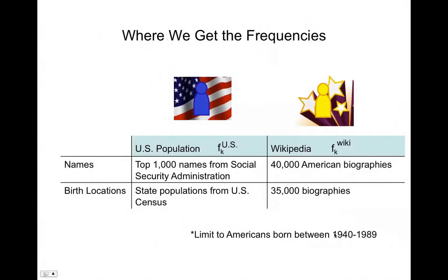Where do we get these frequencies? For the U.S. population, for names we get it from the Social Security Administration, and for birth locations we get it from the U.S. Census. For Wikipedia, we use 40,000 American biographies, and we were able to get birth locations for 35,000 of those biographies.